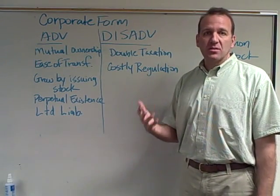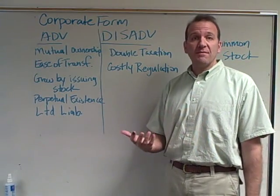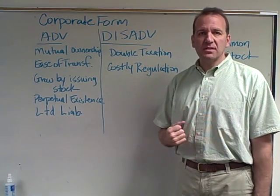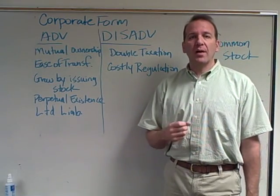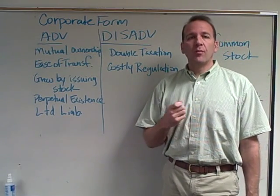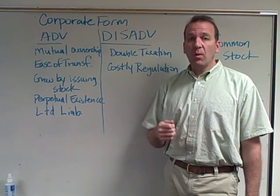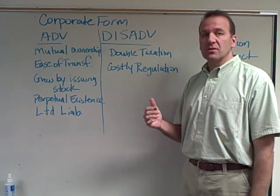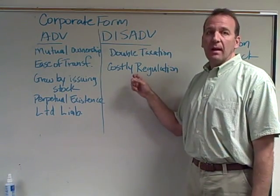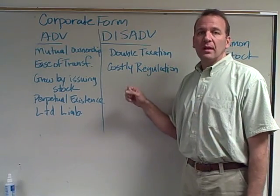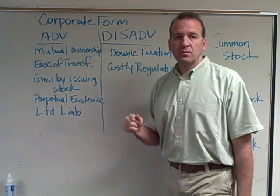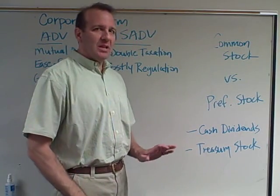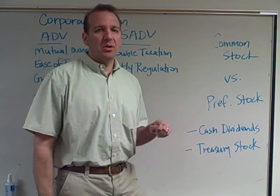Another disadvantage is costly regulation, because you have to file things with the SEC — the Securities and Exchange Commission. If you're a bank or financial institution, you might also have to file with the FDIC. There are many different government agencies that require you to file certain forms and documents, and one of the biggest is the SEC, because if you're on the stock market you have to submit quarterly and annual information to them.